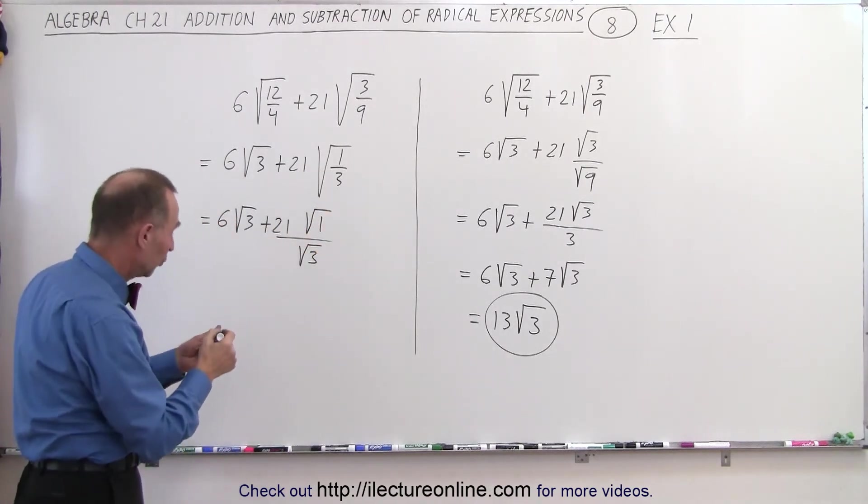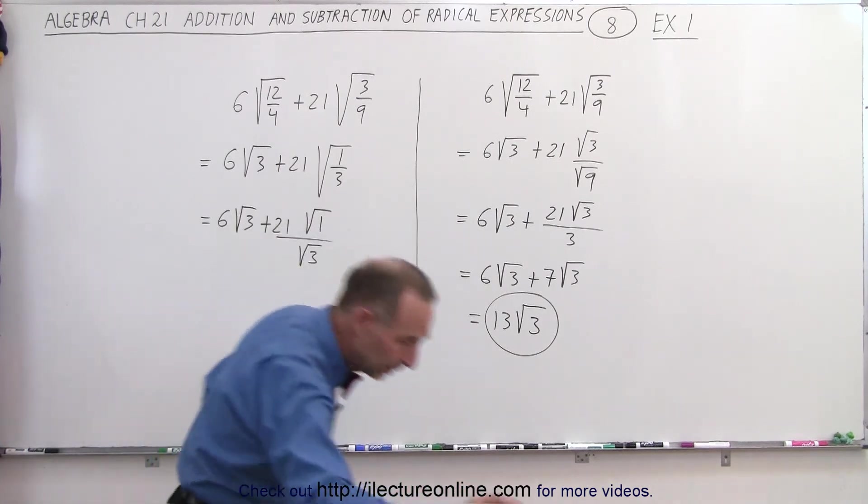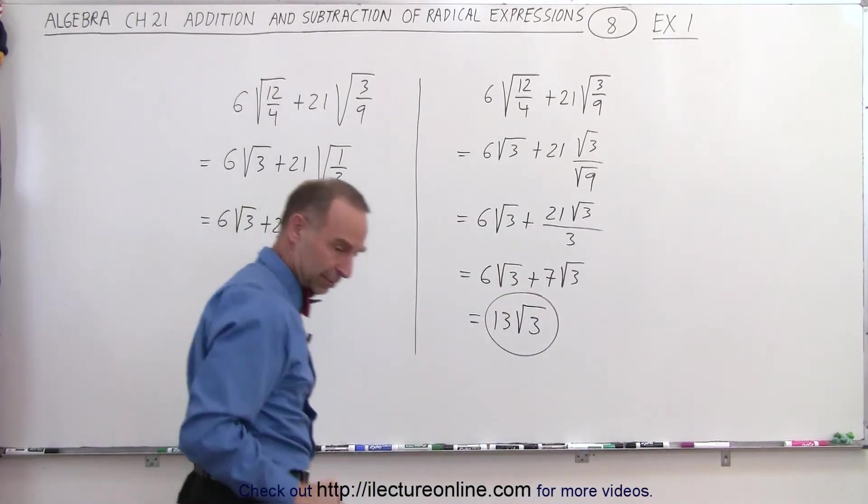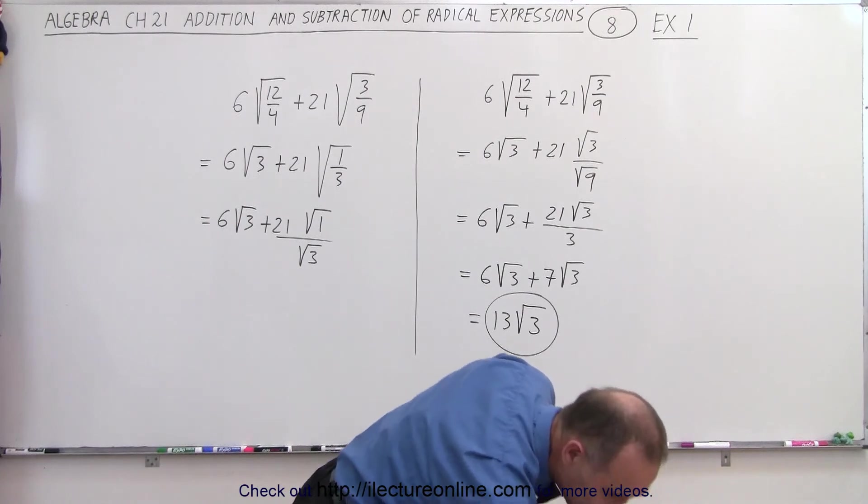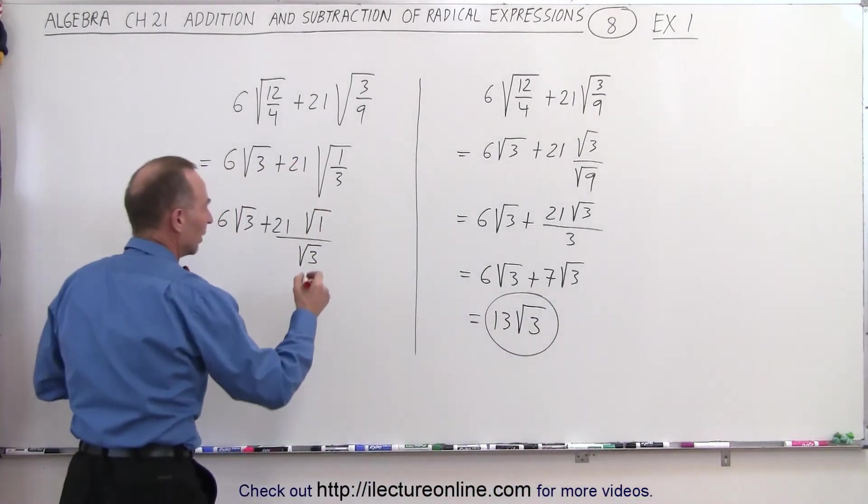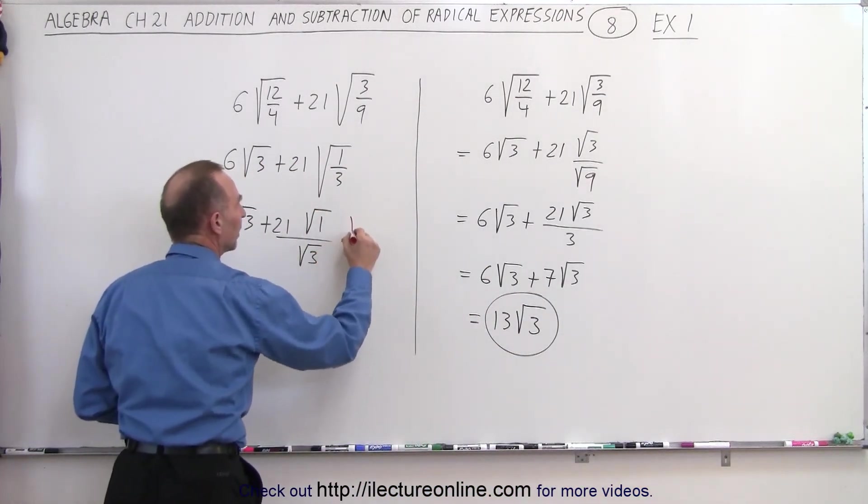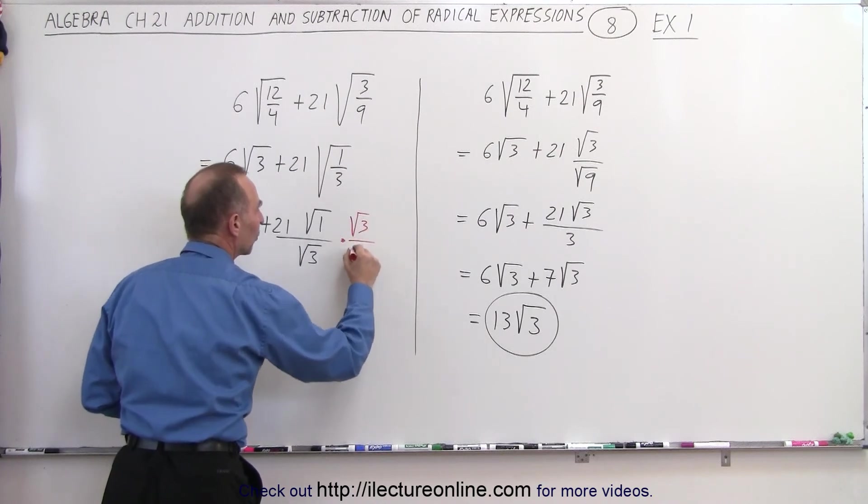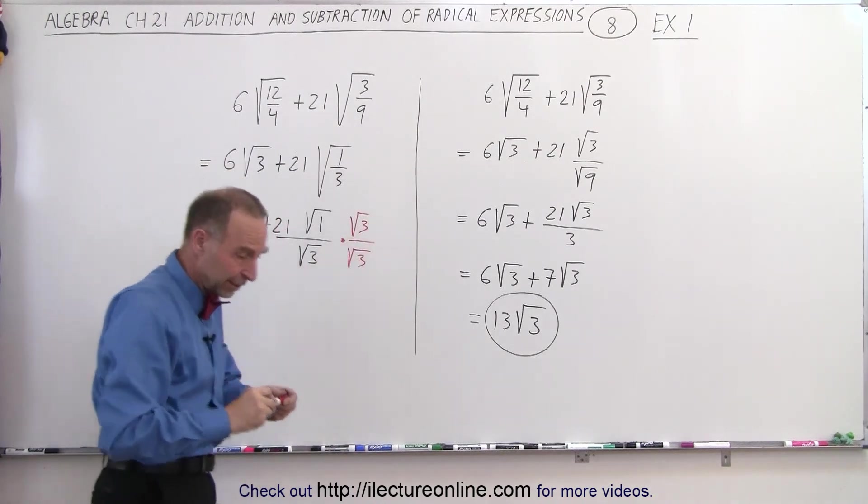And then you would be compelled to rationalize the denominator. So we're going to multiply both the numerator and the denominator by the square root of 3 to rationalize the denominator.